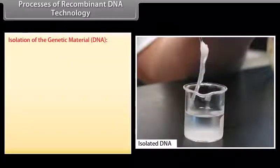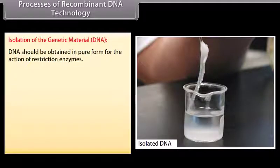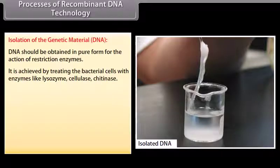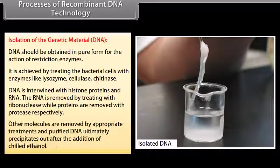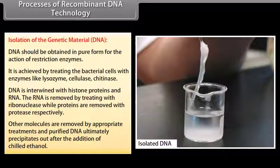Isolation of the genetic material DNA. DNA should be obtained in pure form of the action of restriction enzymes. It is achieved by treating the bacterial cells with enzymes like lysozyme, cellulase, chitinase. DNA is intertwined with histone proteins and RNA. The RNA is removed by treating with ribonuclease while proteins are removed with protease respectively. Other molecules are removed by appropriate treatments and purified DNA ultimately precipitates out after the addition of chilled ethanol.